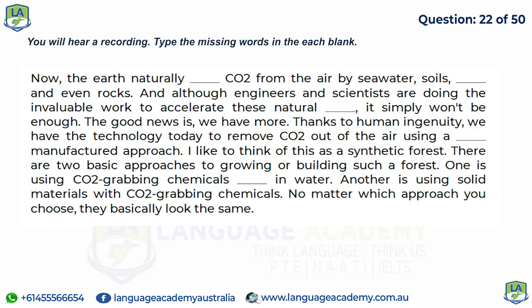The earth naturally removes CO2 from the air through seawater, soils, plants, and rocks. Although engineers and scientists are doing invaluable work to accelerate these natural processes, it simply won't be enough. Thanks to human ingenuity, we have the technology today to remove CO2 from the air using a chemically manufactured approach — a synthetic forest. There are two basic approaches: using CO2-grabbing chemicals dissolved in water, or using solid materials with CO2-grabbing chemicals. No matter which approach you choose, they basically look the same.